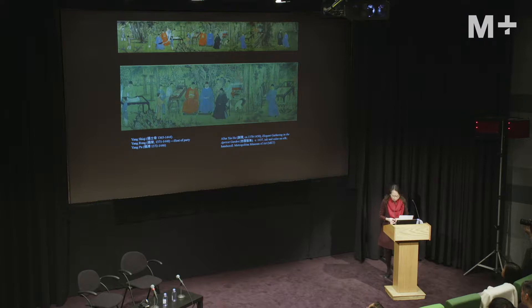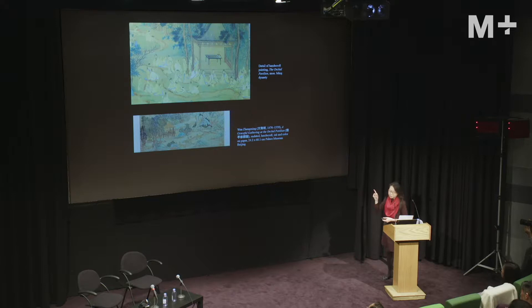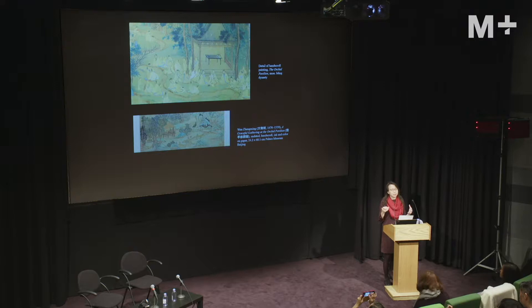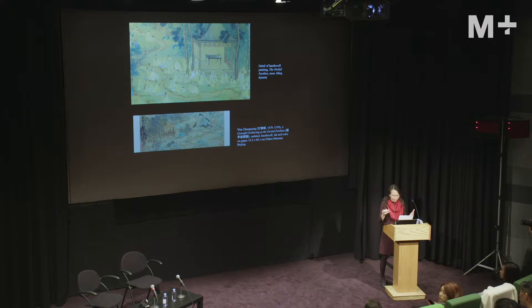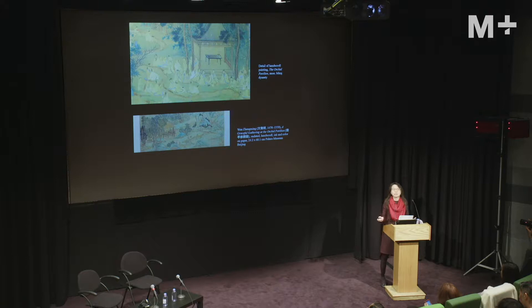All gatherings actually look back to this particular event — all elegant gatherings go back to this historical event. This is the Orchid Pavilion, a reference to perhaps the most archetypal kind of gathering we have: the very famous Orchid Pavilion garden party, which took place on the third day of the third month in 353. The reason it's so famous is that it was held by Wang Xizhi, the grandfather of Chinese calligraphy. We have no existing works by this person, but what he wrote — a preface about this particular garden — is one of the most precious pieces of calligraphy we have today.